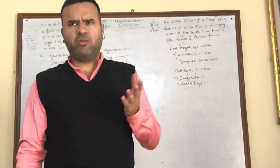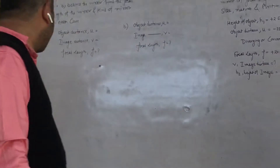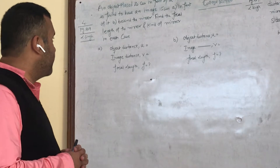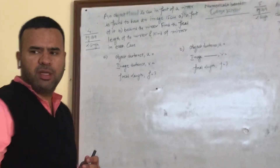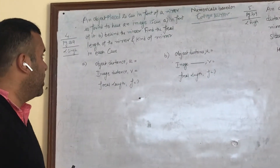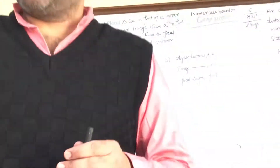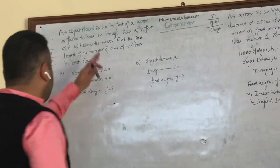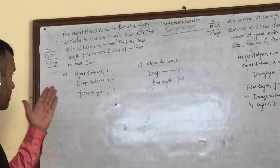All three numericals — one numerical is a mixture of convex and concave. In fact, two are a mixture of convex and concave. These numericals are from Lakhmir Singh, page number 209, question number 4. The question says: an object placed 20 cm in front of a mirror is found to have an image 15 cm in front of it (part A) and behind the mirror (part B). Find the focal length of the mirror and kind of mirror in each case.